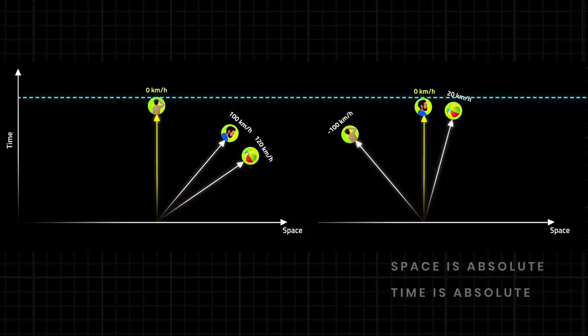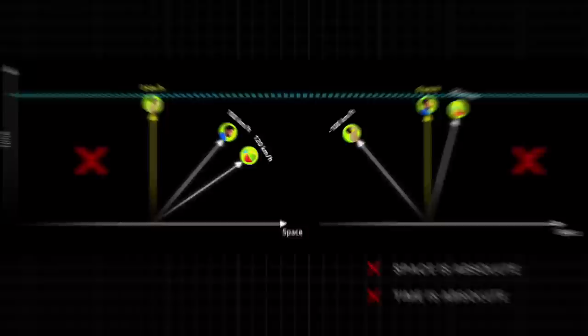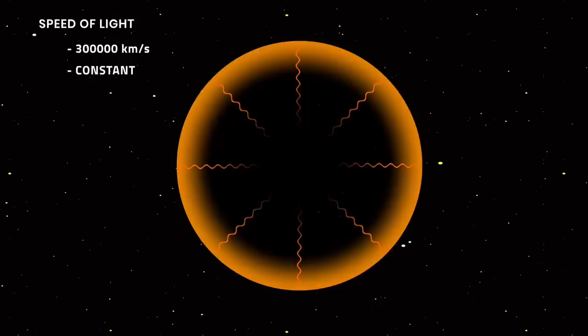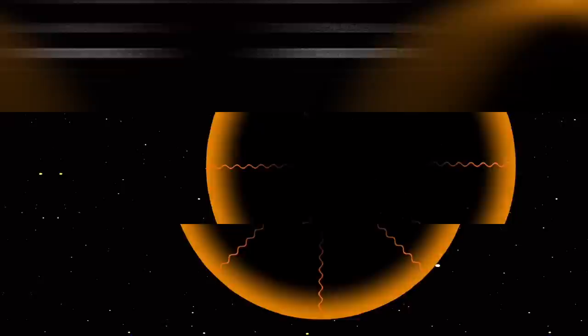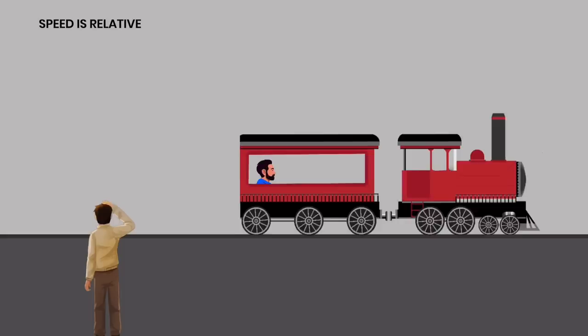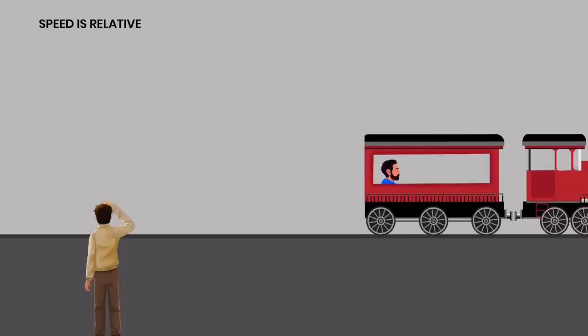From this we can see that space and time appear absolute and non-changeable — but one special feature of the universe tells us that's wrong. That is the speed of light. Light travels at 300,000 kilometers per second and is constant. The real problem is not just the speed of light but the constant nature of that speed. The speed of light is the same for all observers — it doesn't matter whether the observer is stationary or in motion.